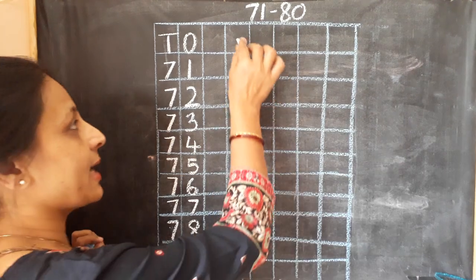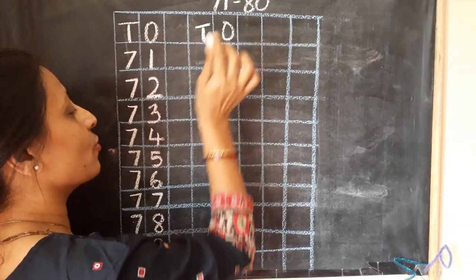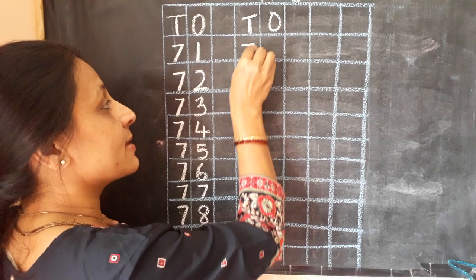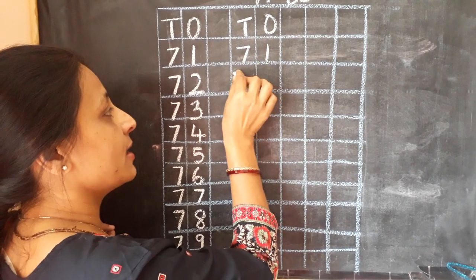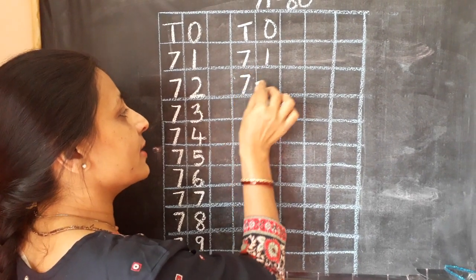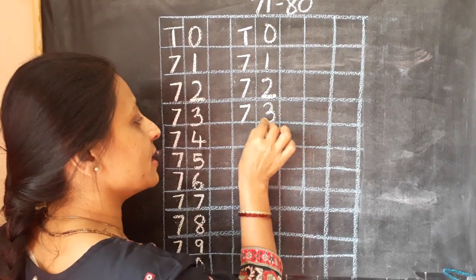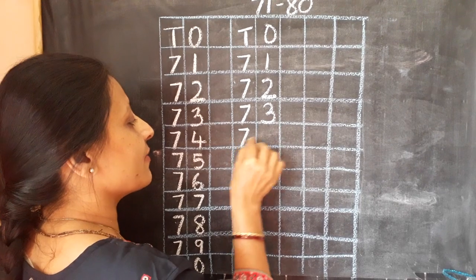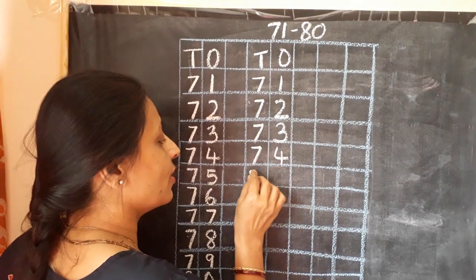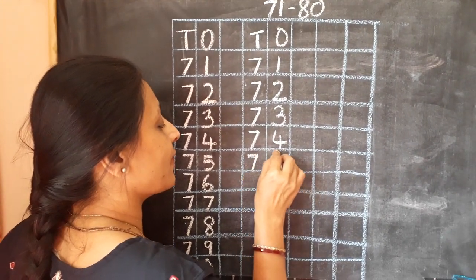79, 79. And 80, 80. Once again, I will show you. We are going to write under T and O box. 71, 71. 72, 72. 73, 73. 74, 74. 75, 75.